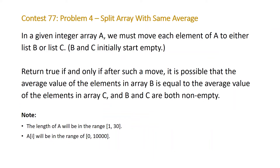The problem states: given an integer array A, we must move each element of A to either list B or list C. B and C initially start empty, and the question asks us to return true if and only if after such a move it is possible that the average value of B equals the average value of C, and B and C are both non-empty. Note that the length of A will be at most 30, and the maximum value of elements in A is 10 to the power of 5.